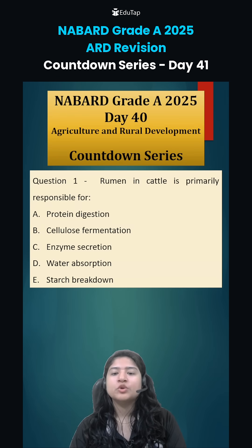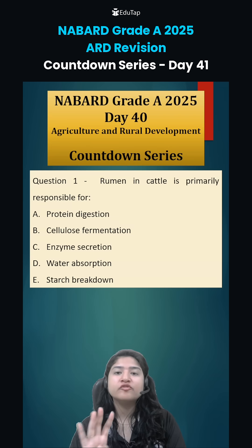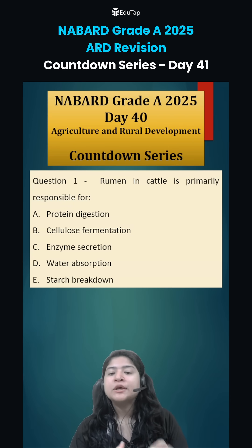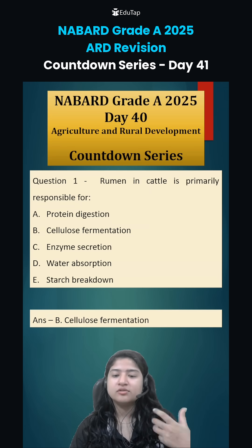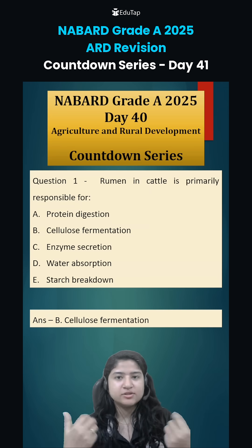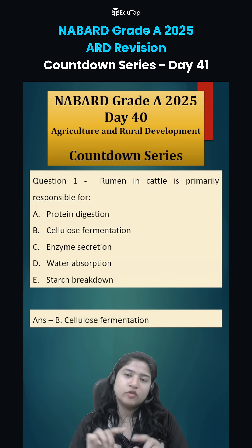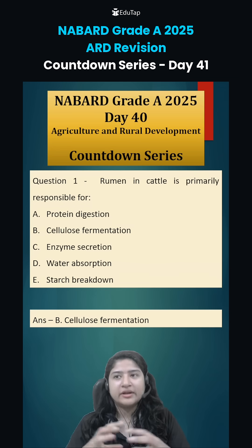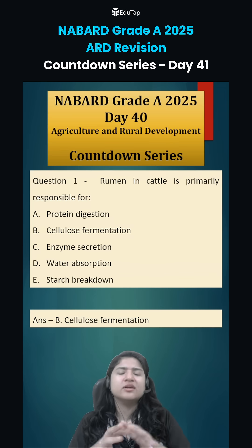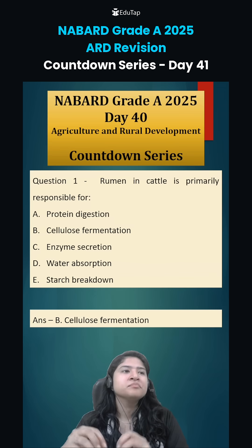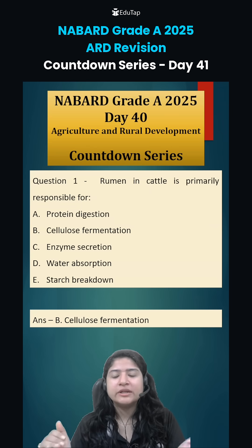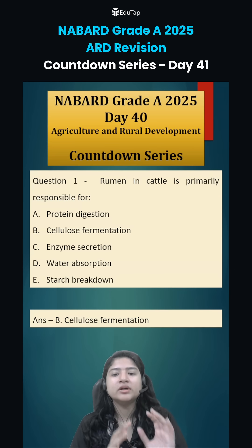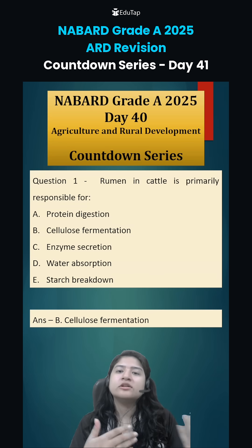Question number 1 was: rumen in cattle is primarily responsible for what? In cattle there are 4 chambers of the stomach, and the first one is the rumen. The rumen's role is cellulose fermentation. Cattle consume plants, and plant cells have a cell wall made of cellulose which is difficult to digest. Ruminants — including cattle and various other herbivorous animals in animal husbandry — have developed a specialized chamber in their stomach system exclusively responsible for cellulose fermentation.